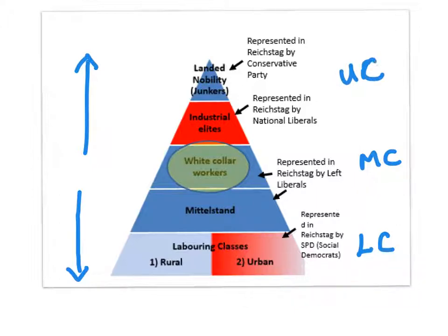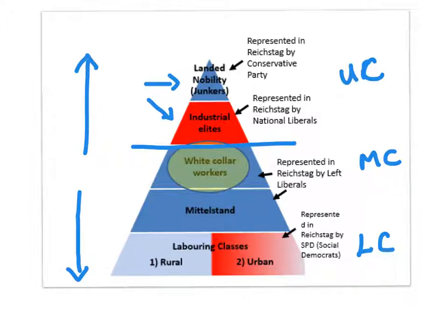Now remember, with Germany you've got the old upper classes — the landed nobility — and you've got the new upper classes, the so-called industrial elites. Broadly speaking, the middle classes are the white-collar workers and the Mittelstand. And then the lower classes: you've got the urban workers, which are the growing, expanding lower classes, and the rural workers — the peasants — who are in relative decline as there is a flight from the land, a movement from the countryside to the cities.